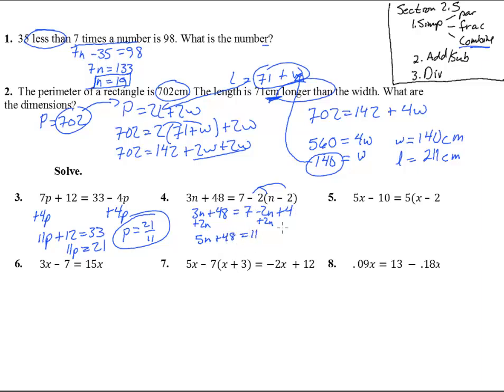There's the 7 and the 4 put together. Subtract 48, 5N equals negative 37 and divide both sides by 5, and we get N equals negative 37 fifths. Or you could punch that in and get negative 7.4.